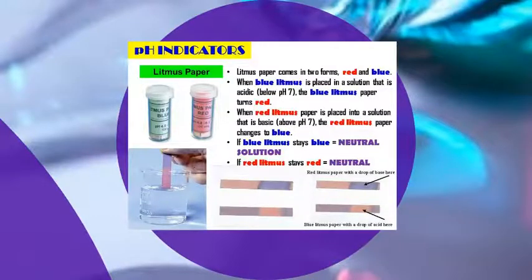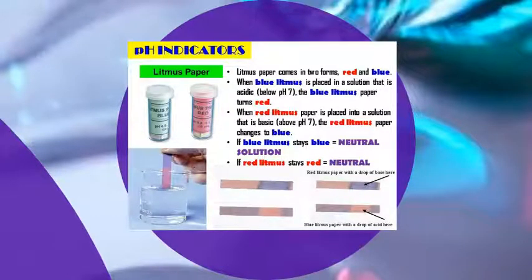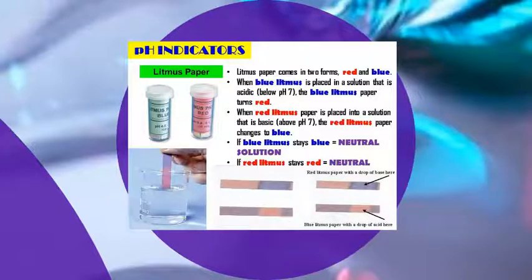Here I want to summarise: blue litmus paper is used to test for alkaline substances, and red litmus paper is used to test for acidic substances. If blue litmus paper changes colour to red, it means the substance is acidic. If red litmus paper changes colour to blue, it means the substance is alkaline. If there is no change to the blue or red litmus paper, it means it is a neutral substance.